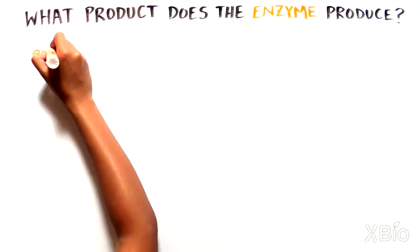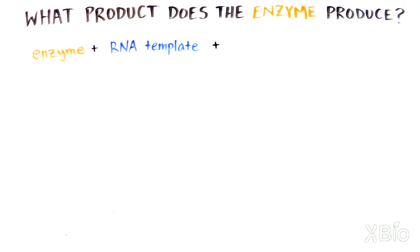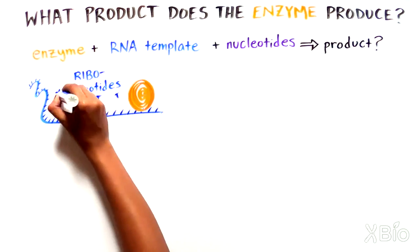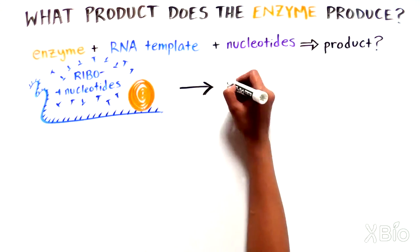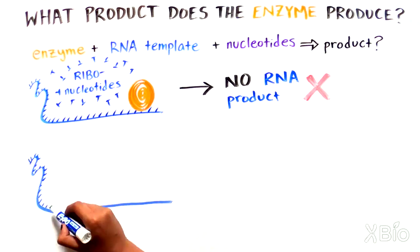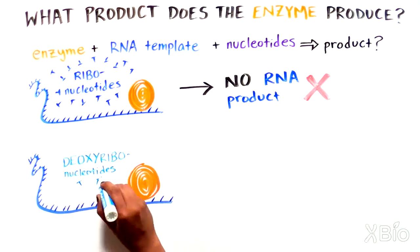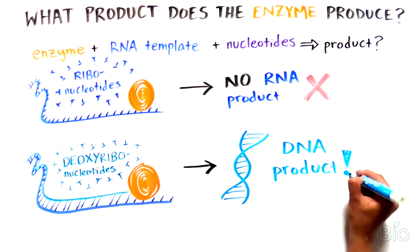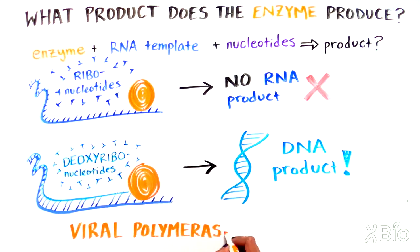To answer this question, they combined the purified enzyme with the RNA template and different kinds of nucleotides to be incorporated into the new product. If the nucleotides given were ribonucleotides, the building blocks of RNA, no product was produced. If instead they gave deoxyribonucleotides, the building blocks of DNA, they could get a product.